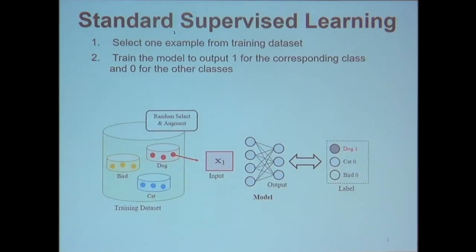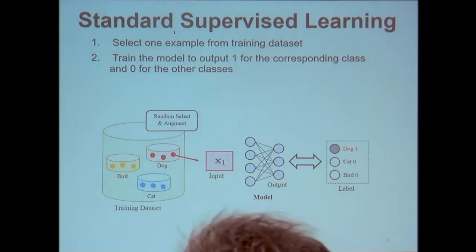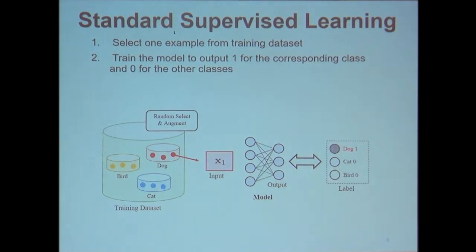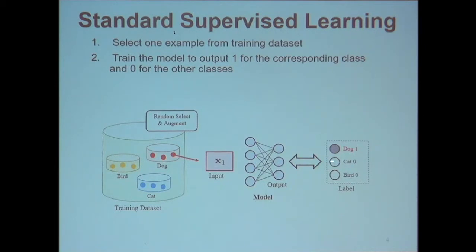The first step of supervised learning is to select one example from the training data. Then we train the model to output one for the corresponding class of the input data, and zeros for the other classes. For example, we pick up one example from the dog class, input it into the network model, and teach the model this is a dog and not a cat, nor a bird. This is the standard learning method.